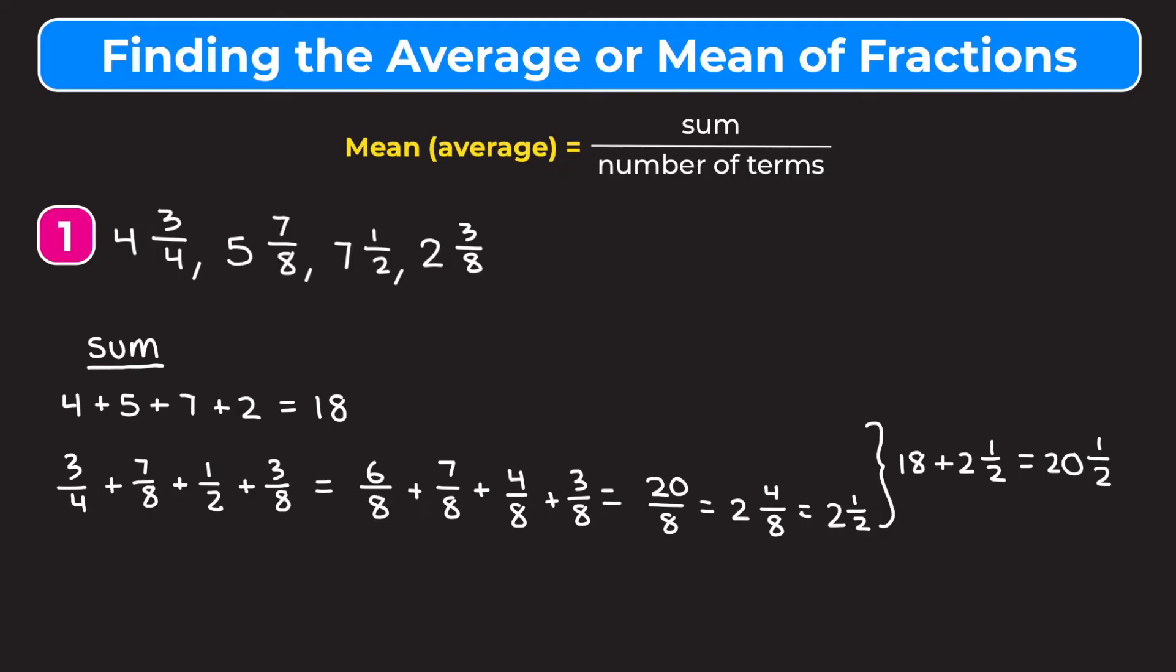And now what we're going to have to do is divide that by the number of terms. So down here on the bottom left, we need to do 20 and one half divided by our four terms. And we're going to switch 20 and a half back into an improper fraction to divide because I think that's easier. So we're going to multiply 20 by two, which is 40. Add the one on top to get 41. Keep our denominator as a two.